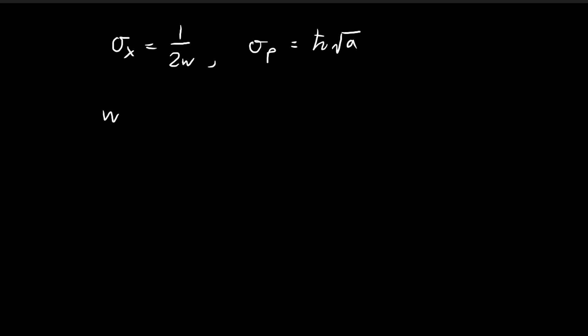Here, w is defined as the square root of a divided by 1 plus y squared, where y is defined as 2ℏa² divided by m.